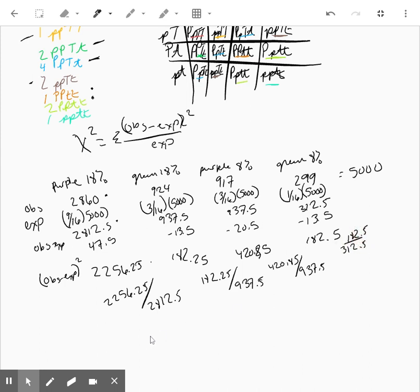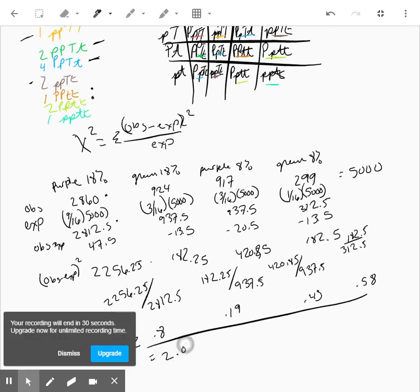And so when we do that, you should end up with 0.8, 0.19, 0.45, 0.58. And then you add all of these together and that's going to equal 2.03.